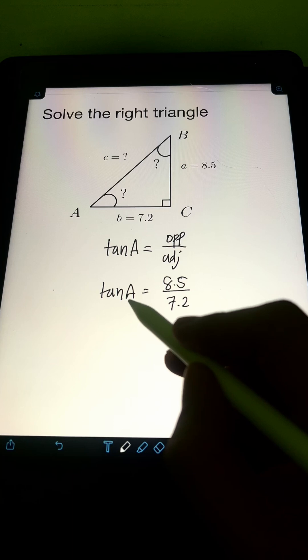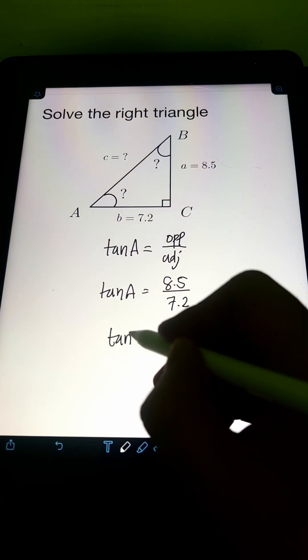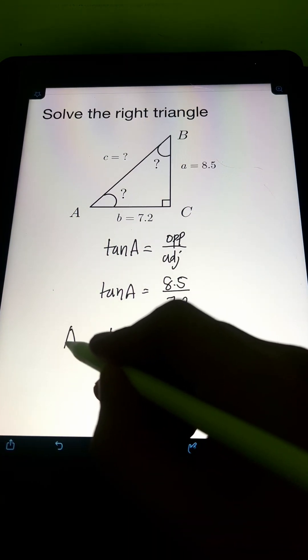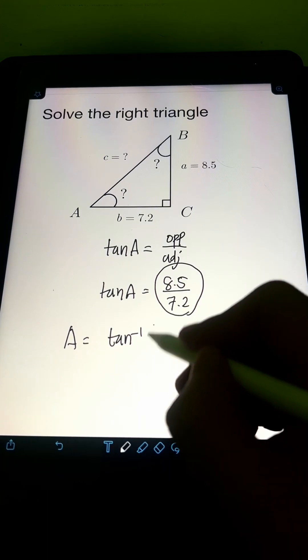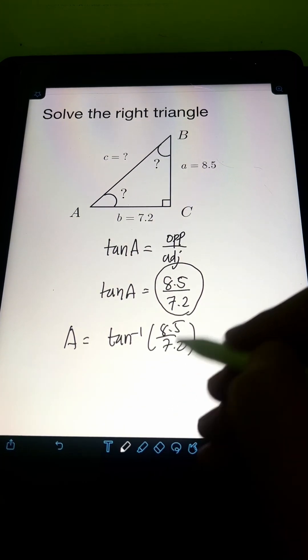And then to find the value of angle A, we simply get the arctangent of this ratio, 8.5 over 7.2.